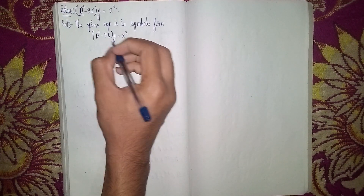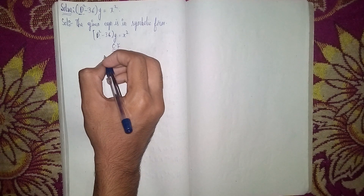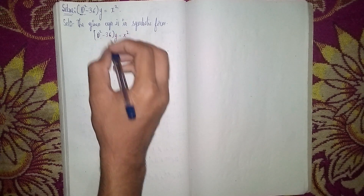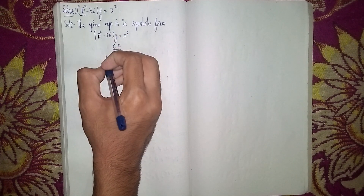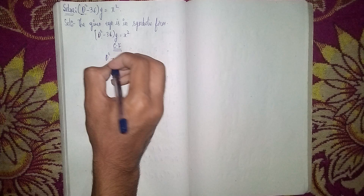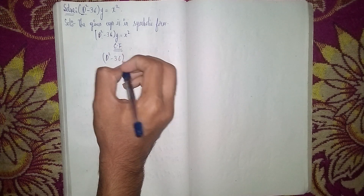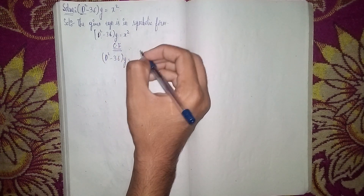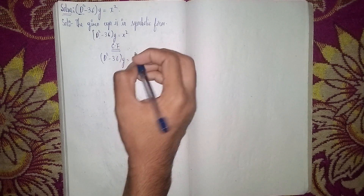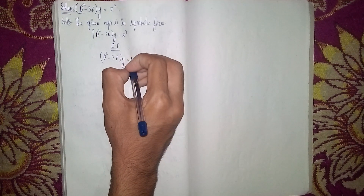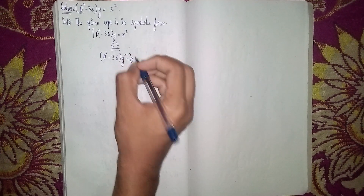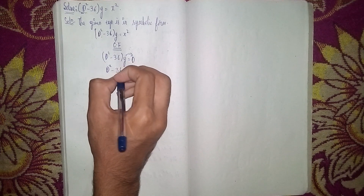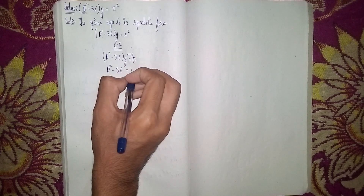For the complementary function, we take the LHS side first. So (D² - 36)y = 0. We do not consider the RHS value in the complementary function — we consider it as 0. So D² - 36 = 0.